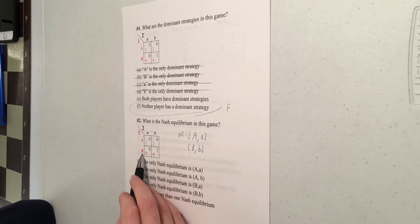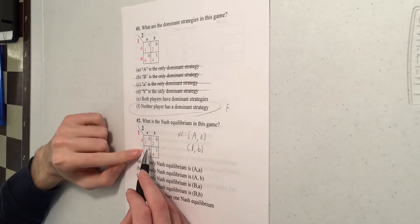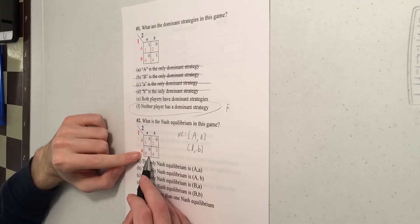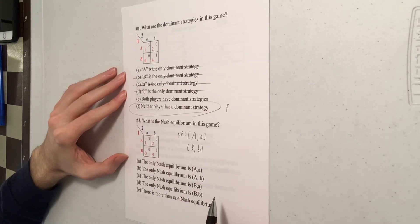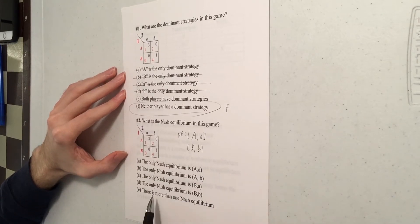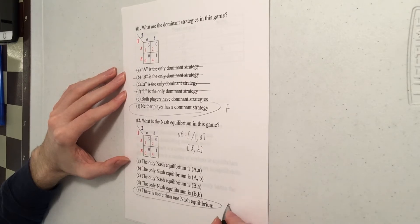Last possibility. What if player one plays big B and player two plays little a? So over here, both players are getting zero. Well, in that case, player one could switch to playing A and get one instead of zero. So one of the players wants to switch. This is not stable. And this is not a Nash equilibrium. So the Nash equilibria are big A little a and big B little b. So out of our options here, would be choice E, more than one Nash equilibrium.